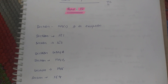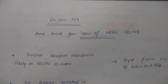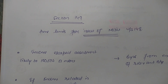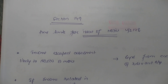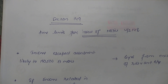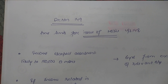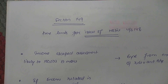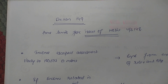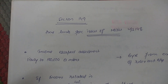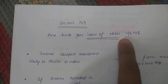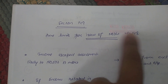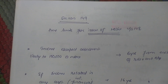Let's start with Section 149, which deals with the time limit for the issue of notice under Section 148. As I mentioned in my last session, in order to do assessment under Section 147, the AO is required to issue notice under Section 148, and there is a timeline for the issue of this notice, which is mentioned in Section 149.